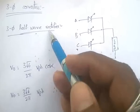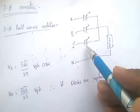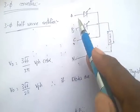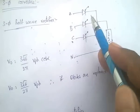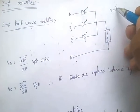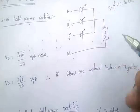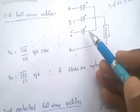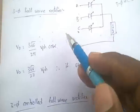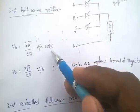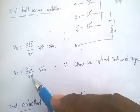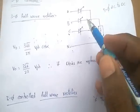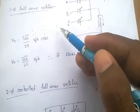Three phase converters. Three phase half-wave rectifier uses three thyristors — one per phase — to convert three-phase AC to DC. Output voltage V₀ = (3√6)/(2π) × Vphase × cos α. If diodes replace thyristors there is no firing angle control, so V₀ = (3√6)/(2π) × Vphase.